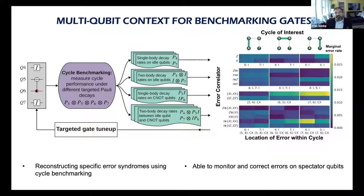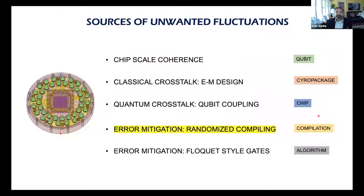With this analysis — choosing the right inputs and outputs — you can really get a handle on what crosstalk mechanisms you have. The utility is that you can then try to undo them using pulse sequences composed to improve fidelity.